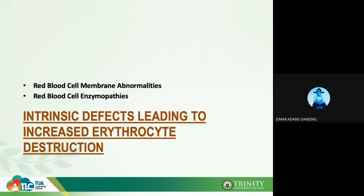Your RBC membrane needs to be deformable because it will pass through different — including very small — blood vessels within your body. Enzymopathies, on the other hand, are due to a lack of enzymes. The enzymes must be complete because if an enzyme is lacking, its product will not be produced, causing a problem inside your RBC. Now let's move forward to hereditary RBC membrane abnormalities.